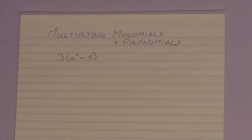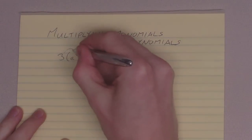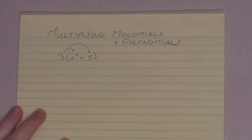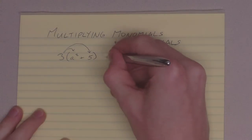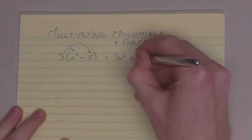We use the distributive property of multiplication here, which means that we're going to take the monomial up front and we're going to distribute it to every single term inside our polynomial there. 3 times a squared is going to give me 3a squared, and 3 times 5 gives me 15.